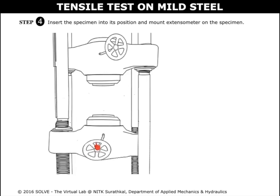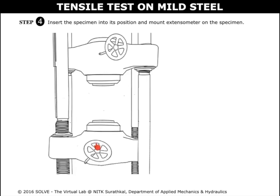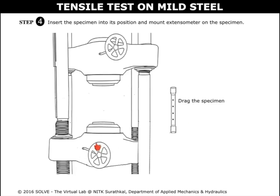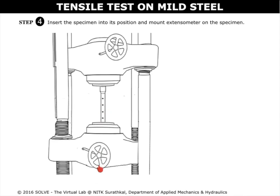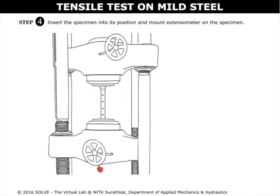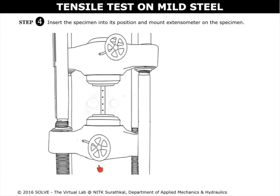Click on the rotating lever to lower the machine bottom part. Now drag the specimen and place it in its position. Click on the lever once again to adjust the height. Then the dial gauge is mounted here.